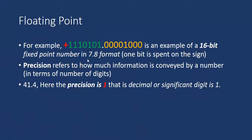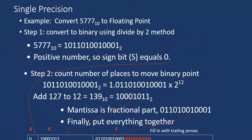Here is one example: +1110101.4×0 1×3×0 is an example of a 16-bit fixed point number. This is in 7.8 format. Here you can see another example for 21.4 where the position is 1, that is the decimal or significant digit is 1.